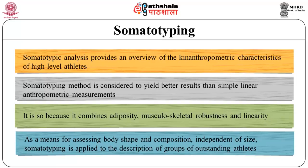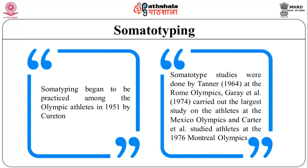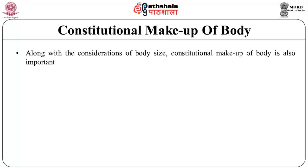Independent of size, somatotyping is applied to the description of groups of outstanding athletes. Somatotyping began to be practiced among Olympic athletes in 1951 by Cureton. Somatotype studies were done by Tanner in 1964 at the Rome Olympics. Garry et al. in 1974 carried out the largest study on athletes at the Mexico Olympics, and Carter et al. studied athletes at the 1976 Montreal Olympics.